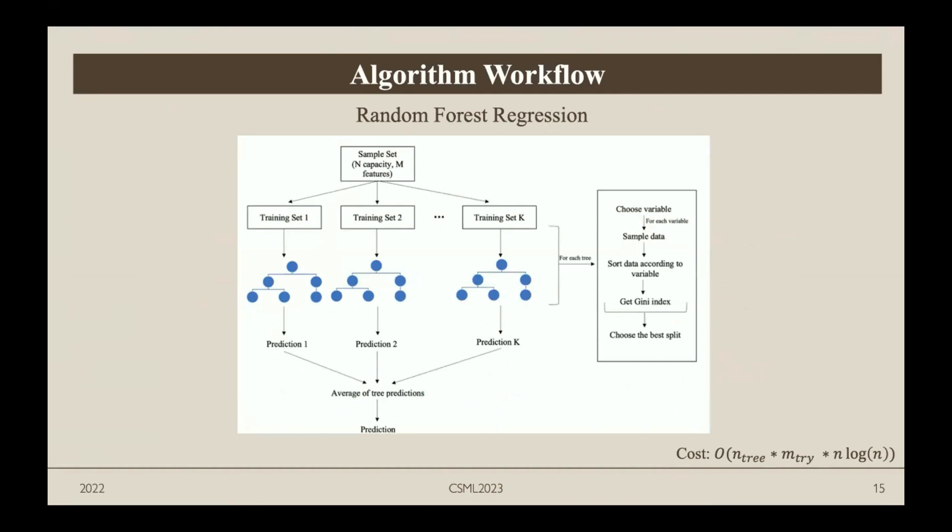The algorithm workflow is according to this chart. We first have a sample set and split it to different training sets, which generates a bunch of trees in a forest. For each tree, we choose the variable first, then sample the data and sort it according to variable importance scores. We get the Gini index, and in the end the best split is determined. The overall prediction is the average of the other tree predictions. The cost of this algorithm is in order of n_estimators times m_try times n times log n, where n is the number of records.